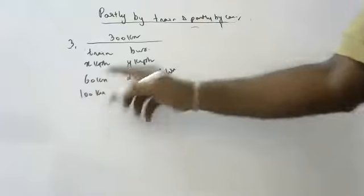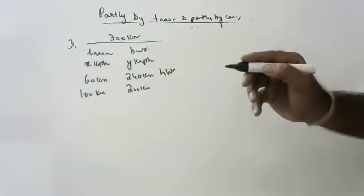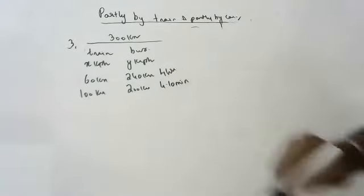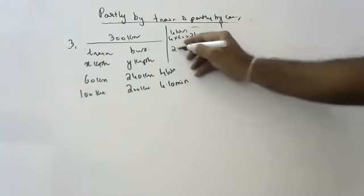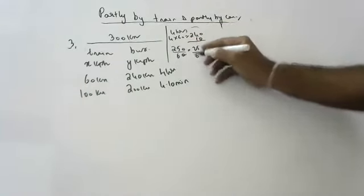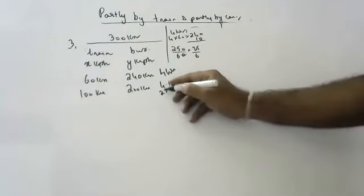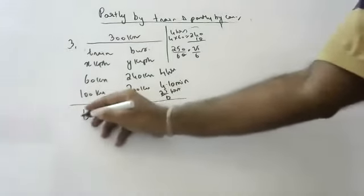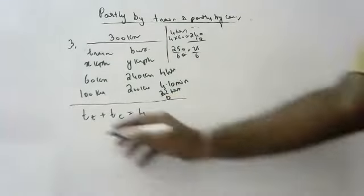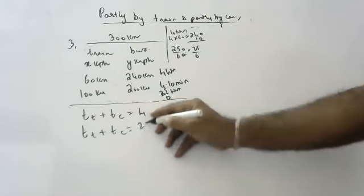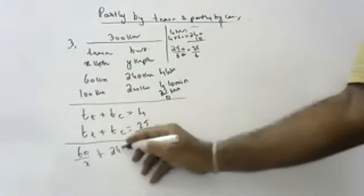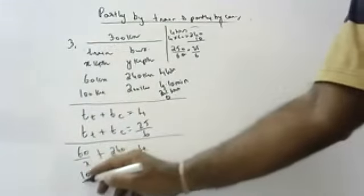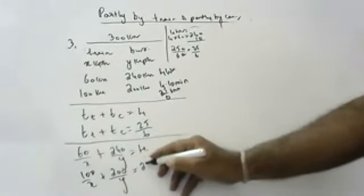If she travels 100 km by train and the remaining 200 km by bus, she takes 10 minutes longer. Setting up equations with 1/x as A and 1/y as B: 60A plus 240B equals 4, and 100A plus 200B equals 25/6.